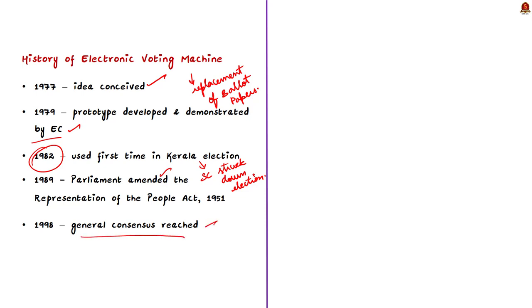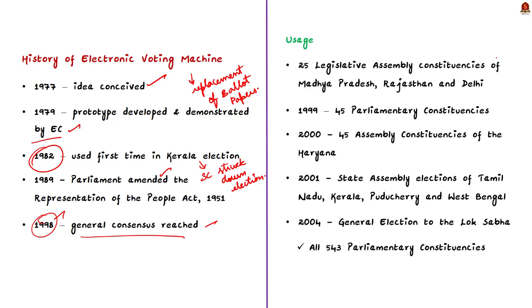A general consensus on the introduction of EVMs was reached only in 1998. And EVMs were used in 25 legislative assembly constituencies which were spread across three states of Madhya Pradesh, Rajasthan and Delhi. It was further expanded in 1999 to 45 parliamentary constituencies. In the 2000 state assembly elections of Tamil Nadu, Kerala, Puducherry and West Bengal, the EVMs were used in all assembly constituencies. Since then, for every state assembly election, the commission has used the electronic voting machines. And finally, in 2004, in the general election to the Lok Sabha, the electronic voting machines were used in all 543 parliamentary constituencies.